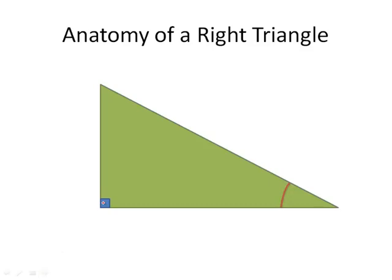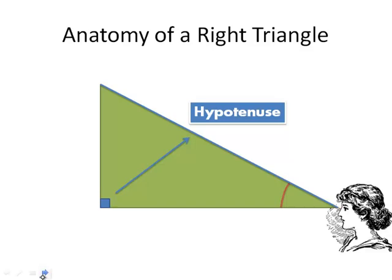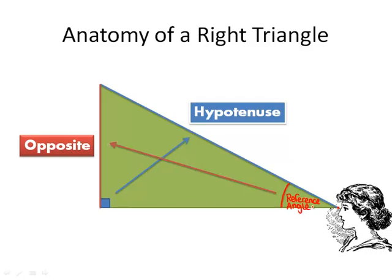So we have a right triangle with 90 degrees in the corner. Across from the 90 degrees is always called the hypotenuse. Now if we chose this tip here where the lady is looking as our angle of reference, then the side that she is looking at is called the opposite side because it's opposite to the reference angle. The side that is adjacent to the reference angle is called the adjacent.